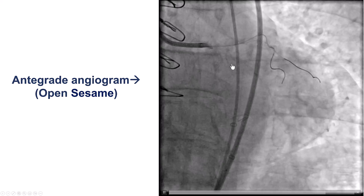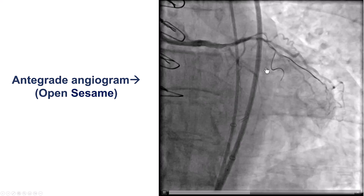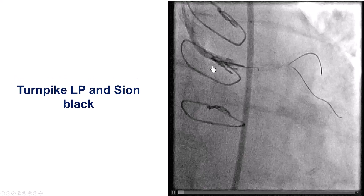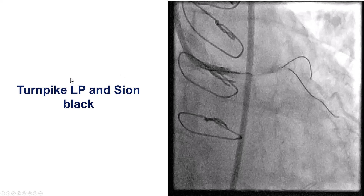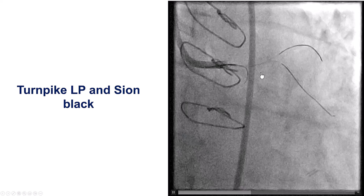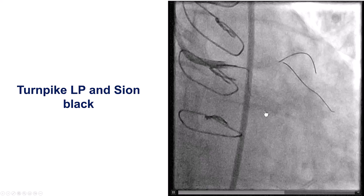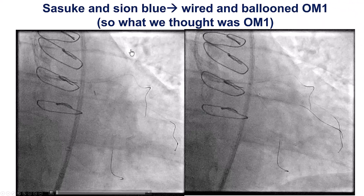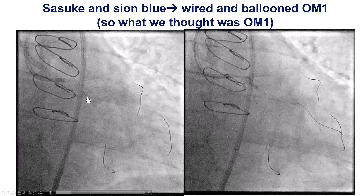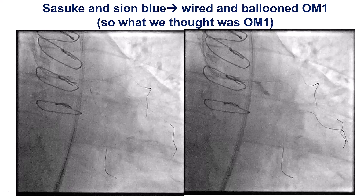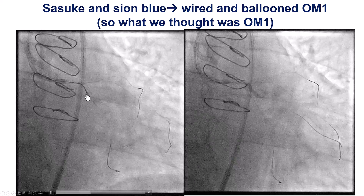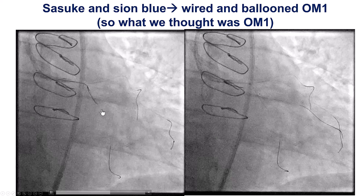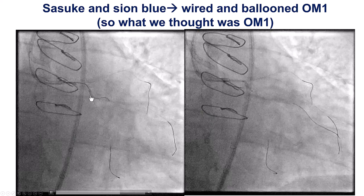Pay close attention to the anatomy here. We have the obtuse marginal branch coming on top, and then the circumflex as well. We advanced a Sion black guide wire through a Turnpike microcatheter, and that wire went down the anticipated course of what seemed to be the obtuse marginal branch. We then used a Sasuki dual lumen microcatheter to advance the guide wire, which had gone into what we thought was the circumflex — actually what we thought was the first obtuse marginal branch.